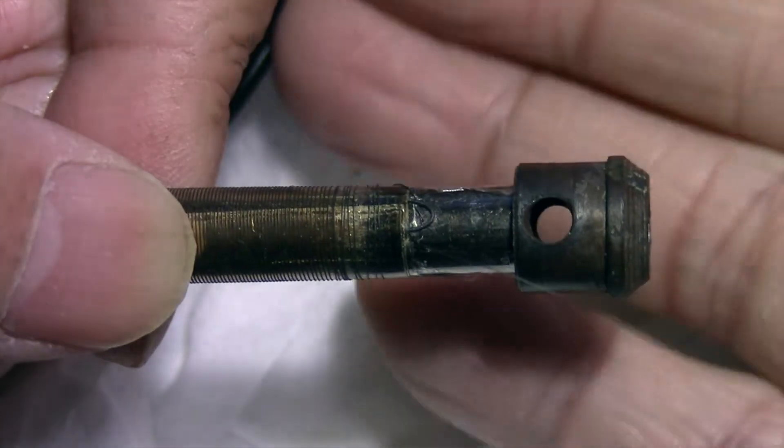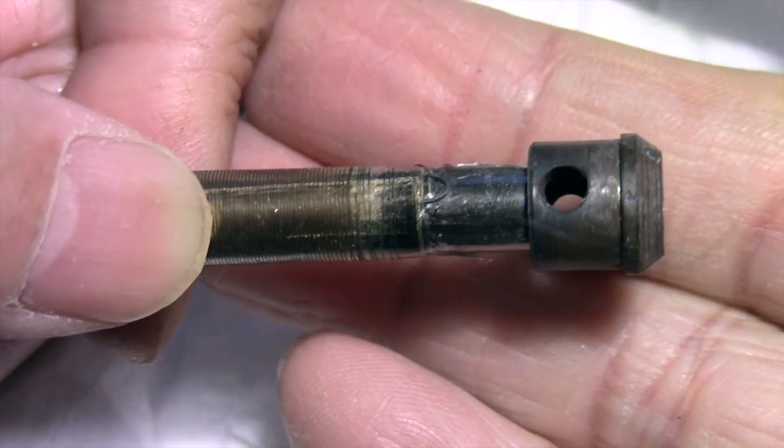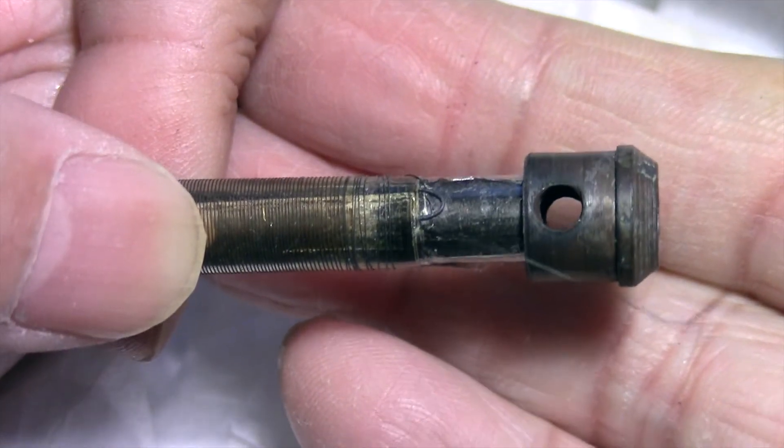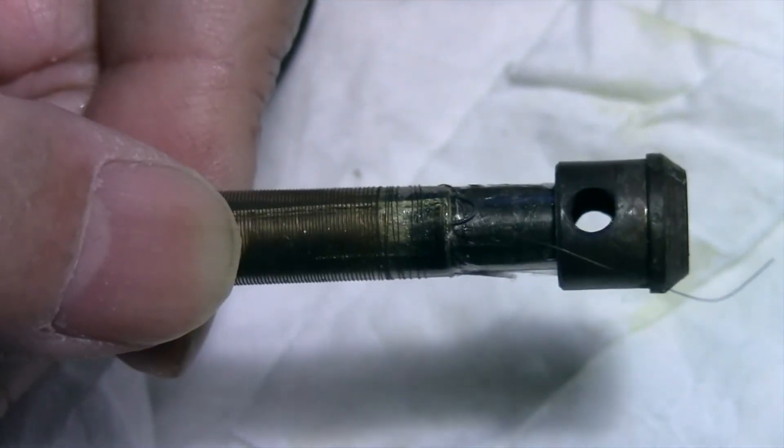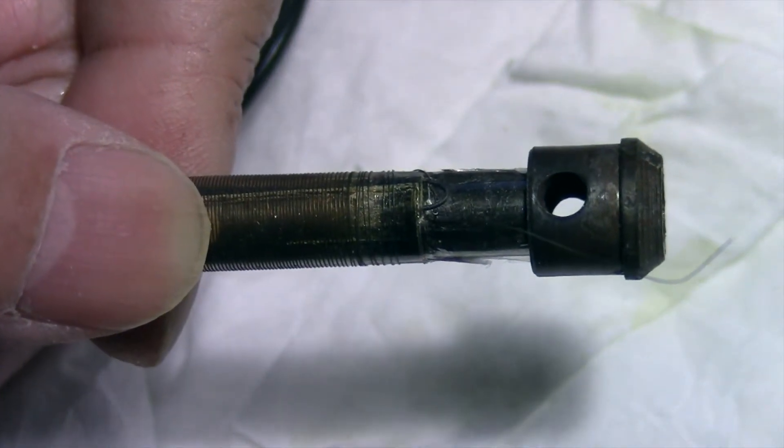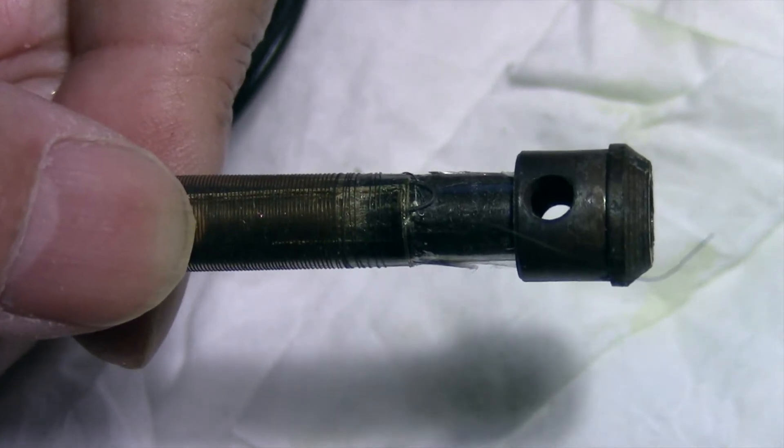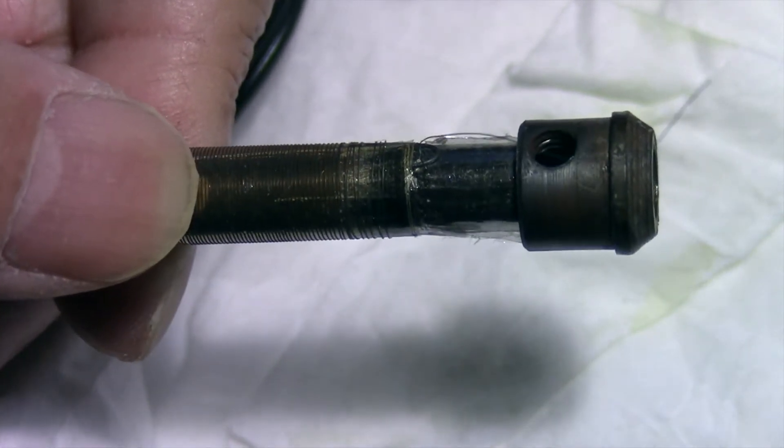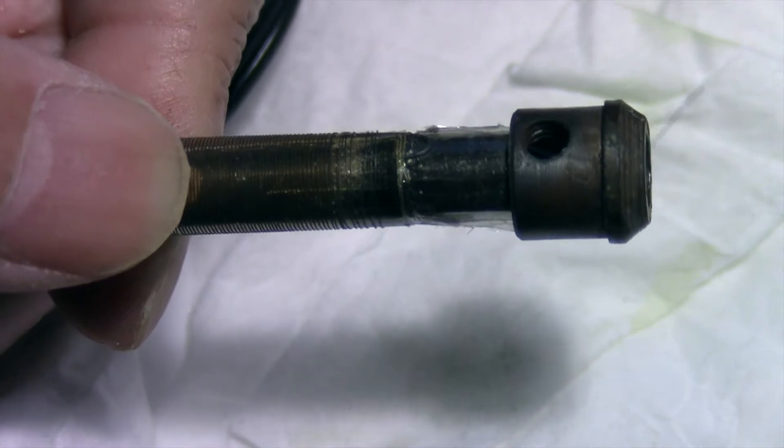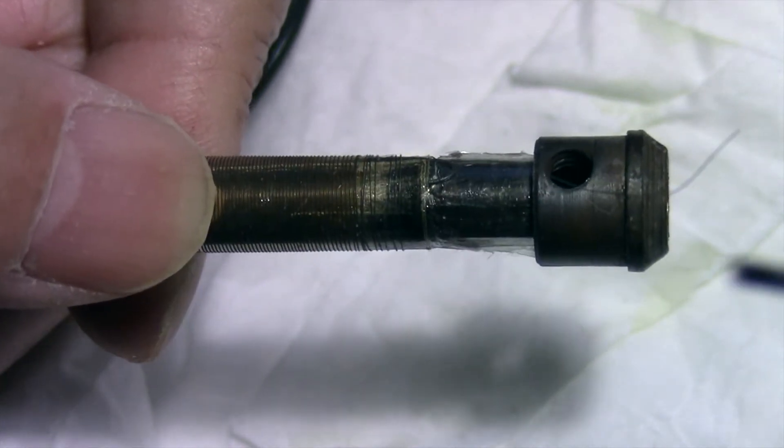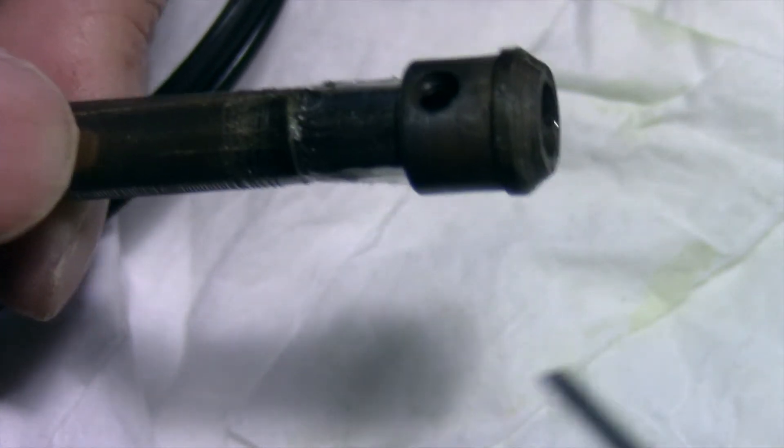What we have here is the business end of a soldering iron. Mine stopped working - it wasn't heating. I checked the wiring to make sure it wasn't broken, and the wiring was okay. I opened up the soldering iron.